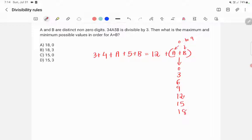Because here it has been said that A and B are distinct and non-zero digits. So A and B are distinct. That means A and B won't be the same digit and they are non-zero. That means A and B won't be 0.